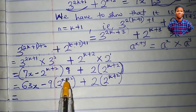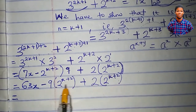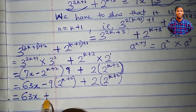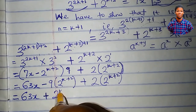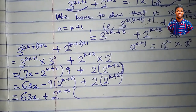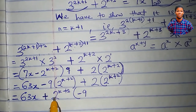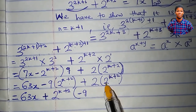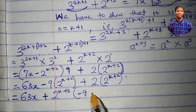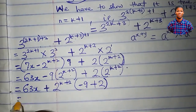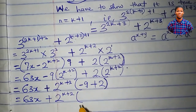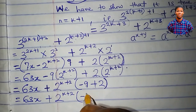We can see 2^(k+2) is common to both terms, so we factor it out: 63x plus 2^(k+2) times (minus 9 plus 2). Minus 9 plus 2 is minus 7. So we have 63x plus 2^(k+2) times (minus 7).